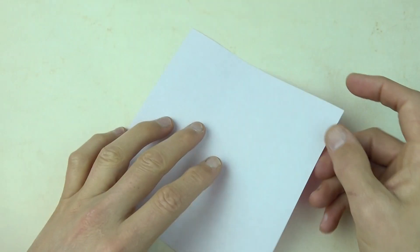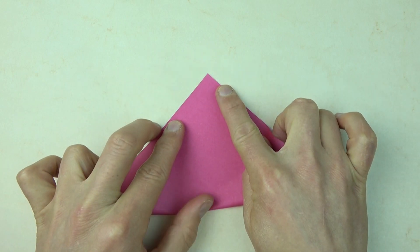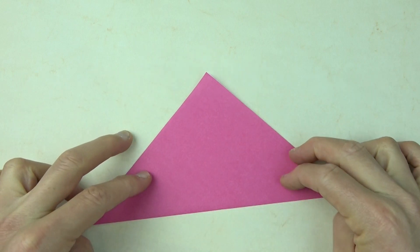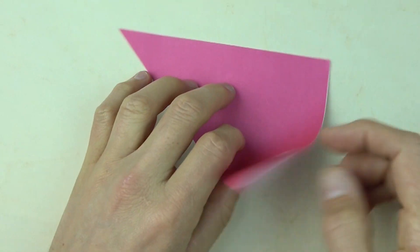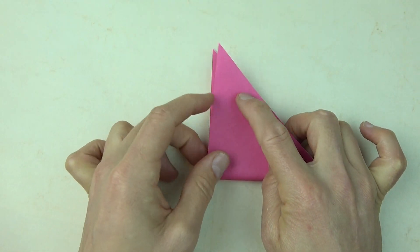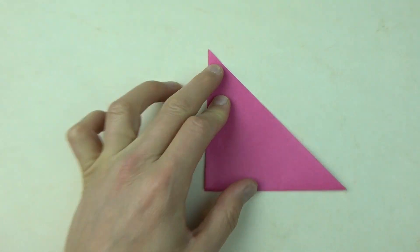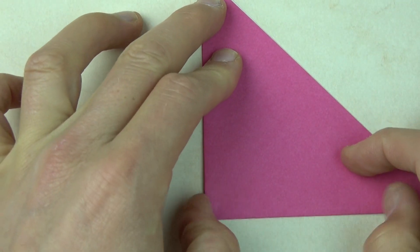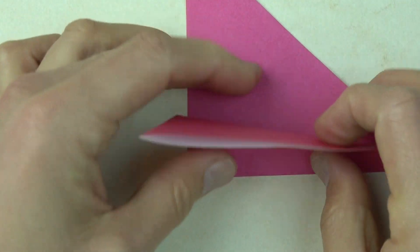Fold the paper diagonally in half. And rotate and fold in half in this direction. And unfold.